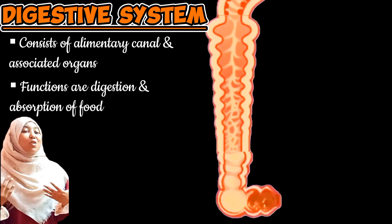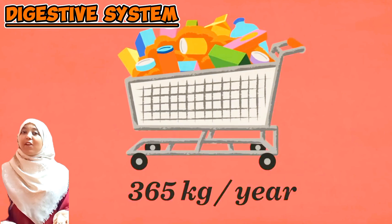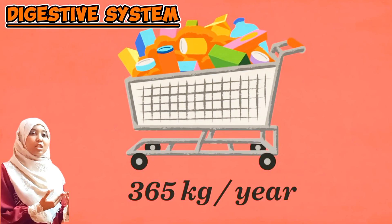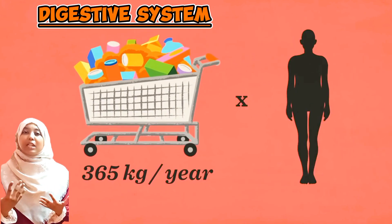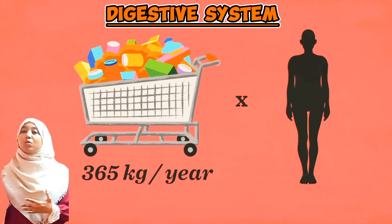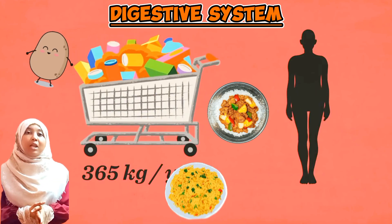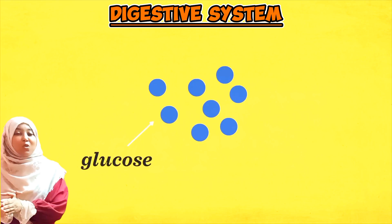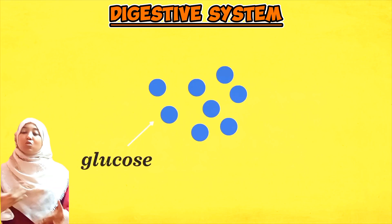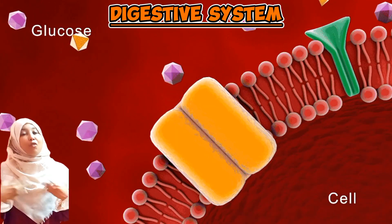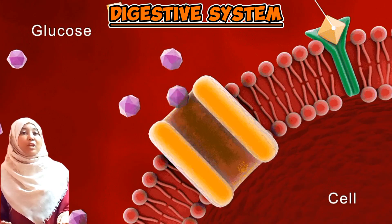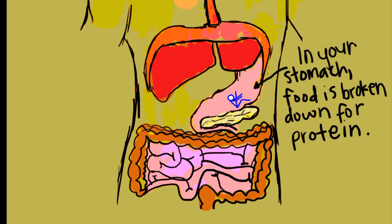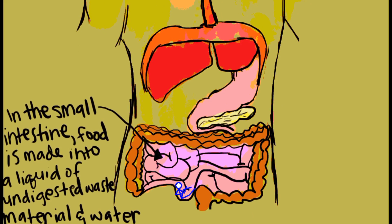For example, with starch — which we eat a lot of in foods such as rice and potatoes — when starch undergoes digestion the final product is usually glucose. It is then easy for our cells to take up glucose and use it for the production of energy. All food substances are broken down to the simplest molecules possible.